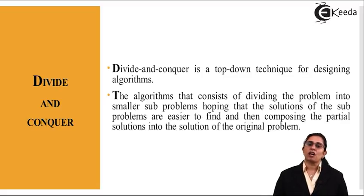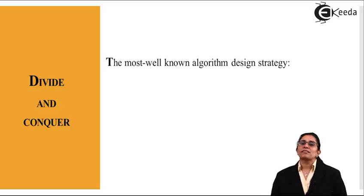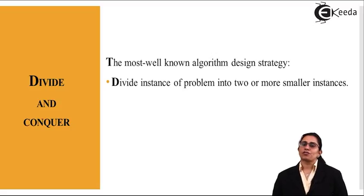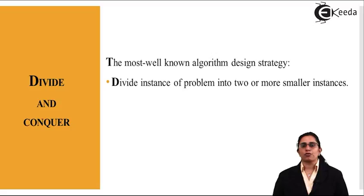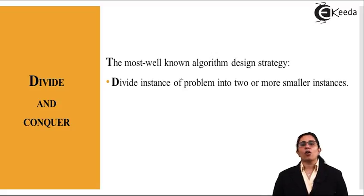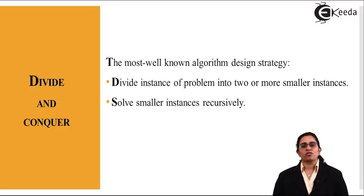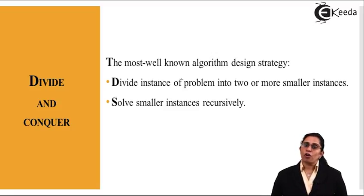The divide and conquer technique has a strategy which says: divide the instance of a problem into two or more smaller instances. Any problem that can be divided into smaller instances can follow a divide and conquer approach. If a problem cannot be subdivided or does not have a concrete solution when divided into smaller bits, then that algorithm should not follow the divide and conquer strategy. Smaller instances are solved recursively — we follow recursion in divide and conquer.